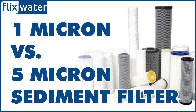Sediment filters remove different contaminants depending on their micron rating. A micron is a unit of measurement describing the pore size of a micron water filter. A single micron is very small — just 0.001 of a millimeter — and is therefore used for measuring very small objects. Human hair can be between 10 and 100 microns wide, while red blood cells are around 10 microns.